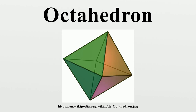The octahedron as a tetra-tetrahedron exists in a sequence of symmetries of quasi-regular polyhedron tilings with vertex configurations, progressing from tilings of the sphere to the Euclidean plane and into the hyperbolic plane. With orbifold notation symmetry of *N32, all of these tilings are Wythoff constructions within a fundamental domain of symmetry, with generator points at the right-angle corner of the domain. As a trigonal antiprism, the octahedron is related to the hexagonal dihedral symmetry family.